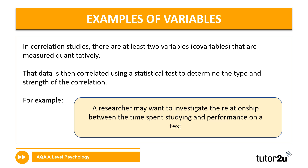Let's look at the variables in correlational research. For the purposes of your A-level, we usually have two variables — those co-variables — and they're going to be measured quantitatively, so numerically. Then we look at the strength of the correlation to determine what type of correlation we have. We can look at the strength by doing a statistical test, but you are not required to do that. For example, a researcher may want to investigate the relationship between the time spent studying and performance on a test — two clear co-variables: time spent studying and performance on the test.